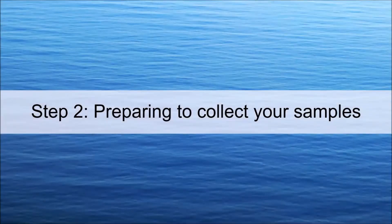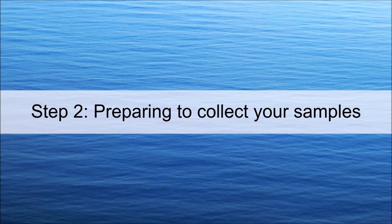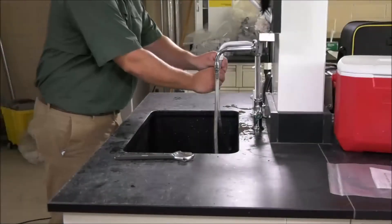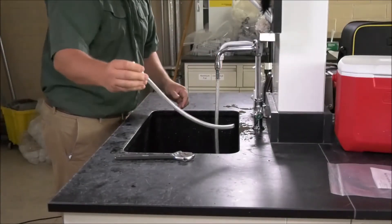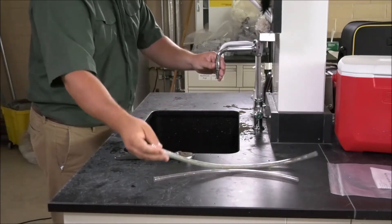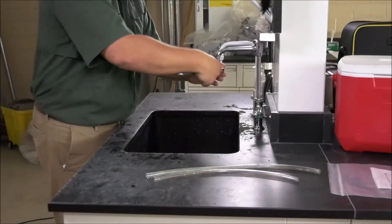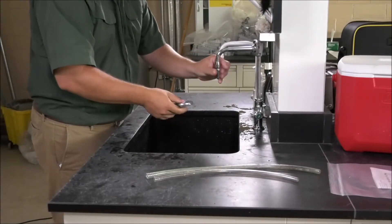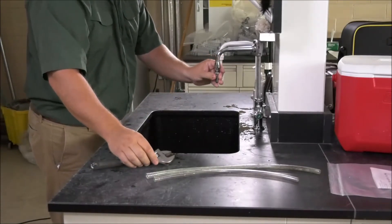Step 2: Preparing to collect your samples. Before you begin, if you are using a faucet or a tap, remove any plastic tubing that may be attached. Remove the aerator and screen. All this done before you begin collecting your samples.